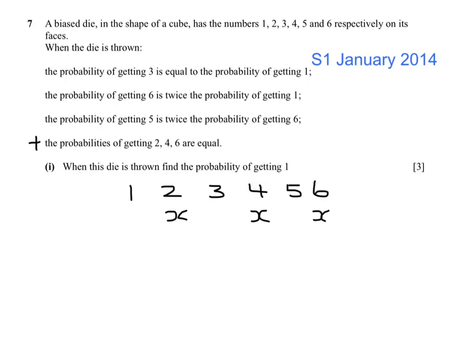The probability of getting a 3 is equal to the probability of getting a 1. The probability of getting a 6 is twice the probability of a 1. So 1 is half of 6 and 3 is the same as 1. And the probability of a 5 is twice 6.